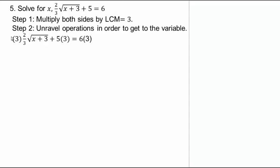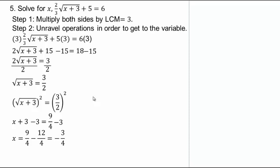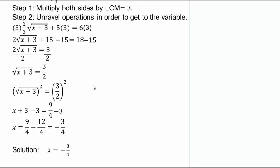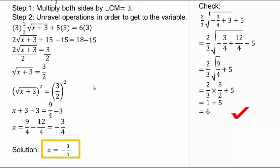When you multiply by 3, 3 times two-thirds gives you 2, 5 times 3 is 15, and 6 times 3 is 18. Our task is to solve for x, so we need to free x from underneath the radical. Subtract 15 from both sides: 18 minus 15 is 3. Divide both sides by 2. To undo the square root, square both sides, giving x plus 3 equals nine quarters. Subtract 3 — which is twelve fourths — from both sides: x equals negative three quarters. Checking: negative three quarters plus 3 equals nine quarters, and two-thirds times three halves equals 1 plus 5, which equals 6. It checks out, so x equals negative three quarters is the solution.